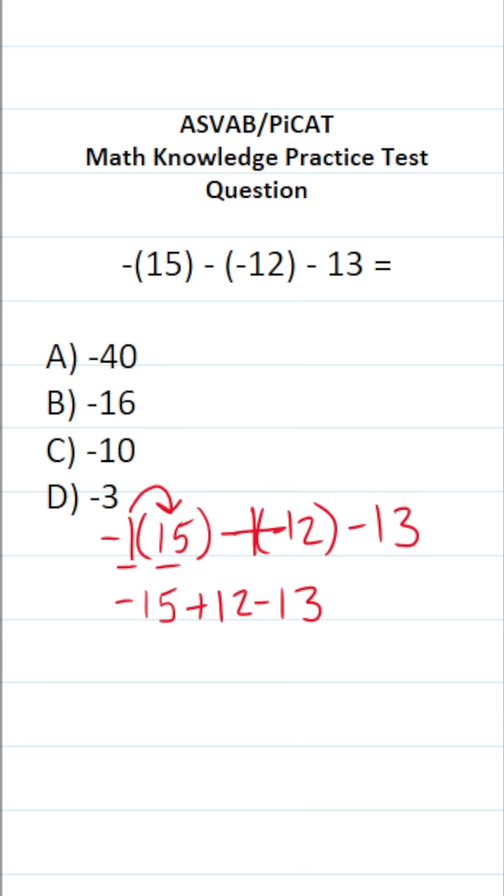All right. So the way I like to work this one out is from left to right. Again, the order of operations says you work things out in an expression according to the order of operations, starting with parentheses, exponents, multiplication, and division as it appears in the expression from left to right. And then finally, addition and subtraction as it appears in the expression from left to right.